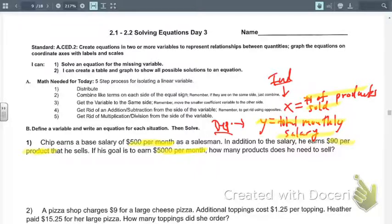Let's create an equation. The total monthly salary, Y, is going to equal $90 times X. He makes $90 for every product that he sells, so 90X. And then we're going to add the $500 that is his base salary that he makes every month, regardless if he sells any product or not. That $500 is constant. He doesn't have to sell any products and he's making $500 at least. So that $500 is your constant, it's your initial value.